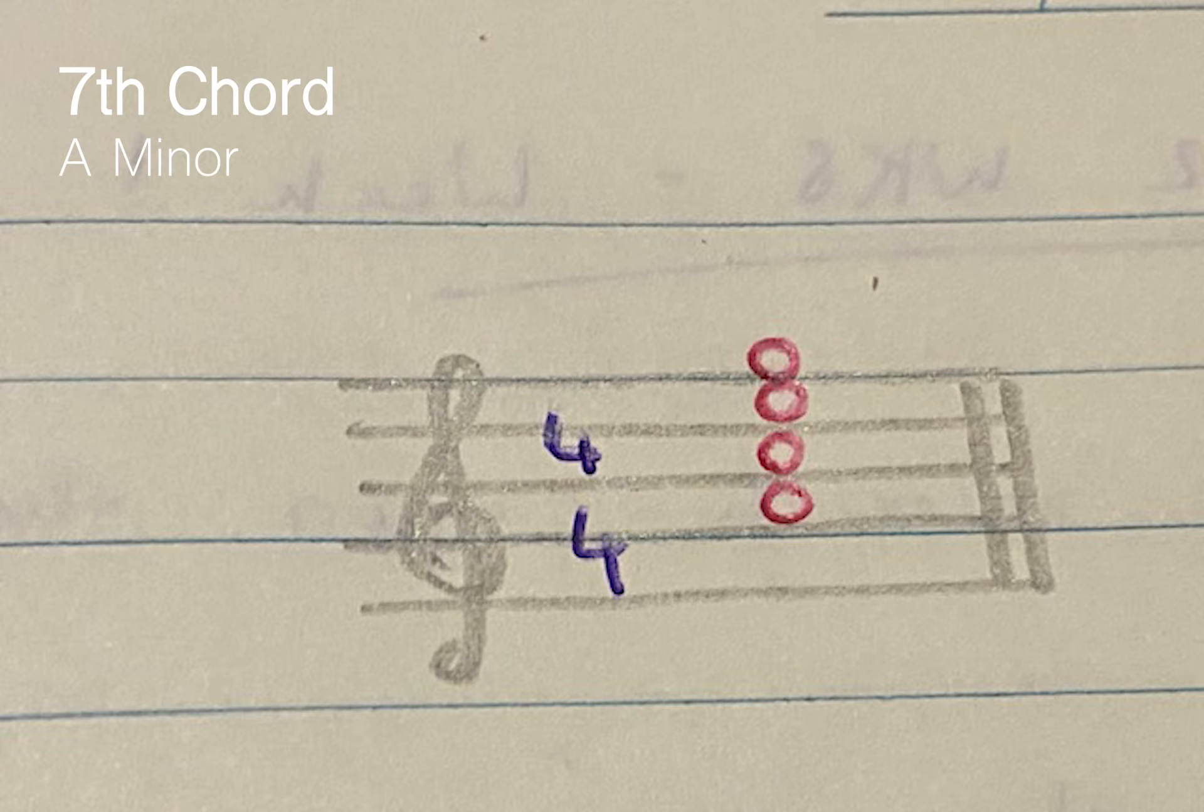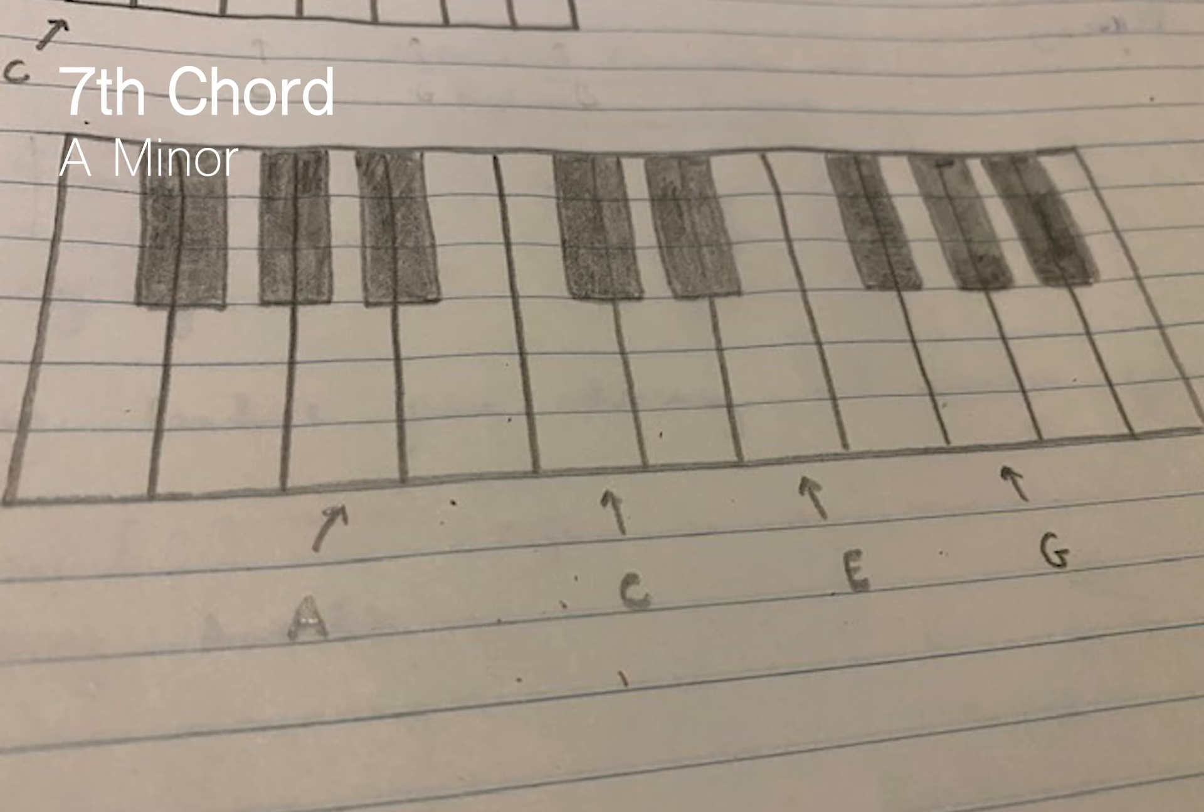And then we add in the seventh note of A minor. Count from A: A is one, B is two, C is three, D is four, E is five, F is six, and then the seventh note would be G. So then the seventh chord of A minor would be A, C, E, and G. Simple as that.